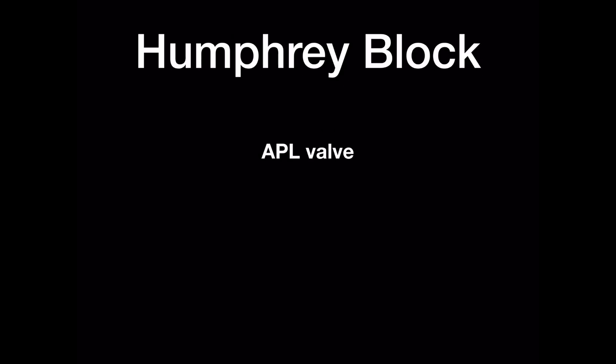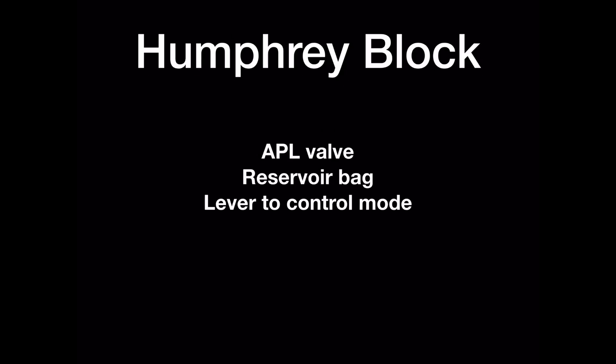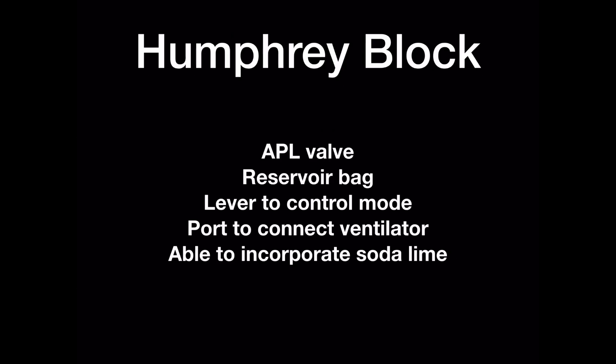The Humphrey block consists of an adjustable pressure limiting, or APL, valve, a reservoir bag, and a lever which is used to select either spontaneous ventilation mode or controlled ventilation mode — we will discuss this further in a moment. There is also a port to connect to a ventilator, and it is capable of incorporating a soda lime canister if required.